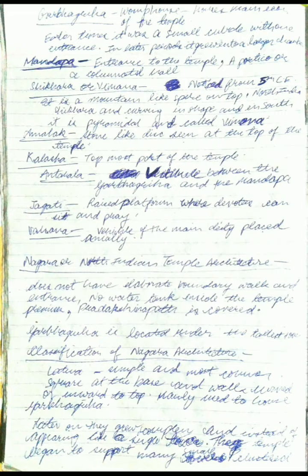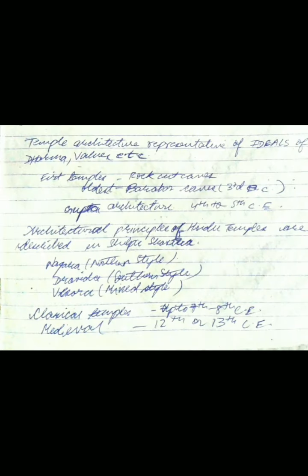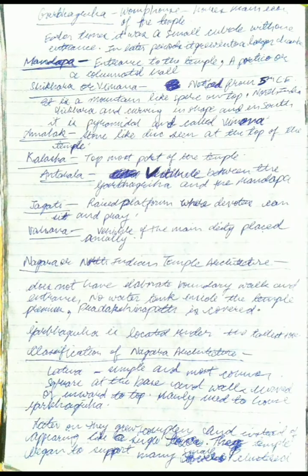The different parts common to all temples begin with the Garbhagriha, meaning 'womb house,' which houses the main deity. In earlier times it was a small cubicle with one entrance, but in later periods it grew into a large chamber.